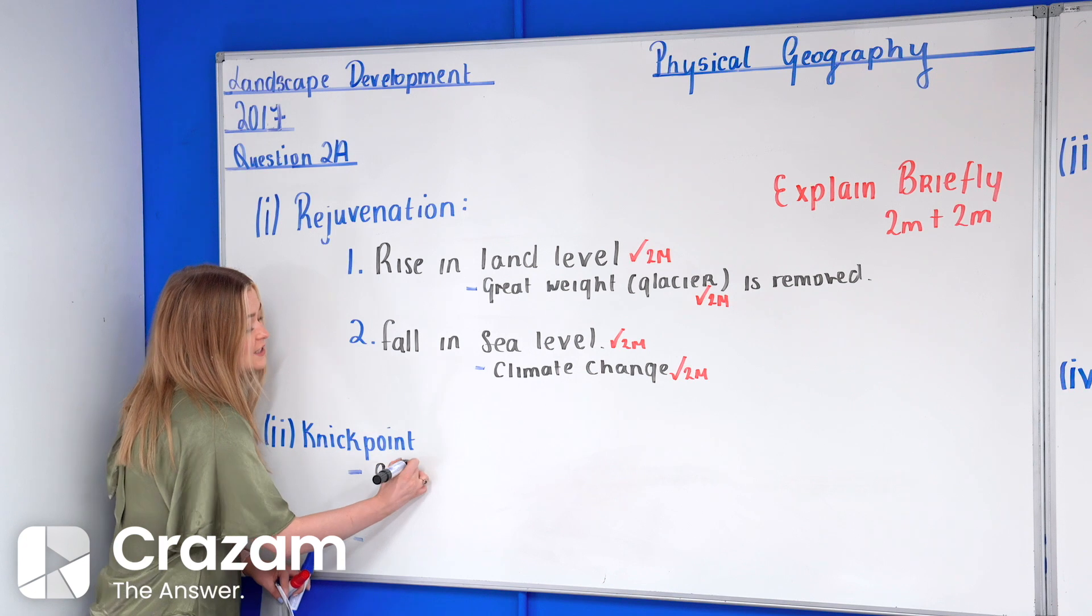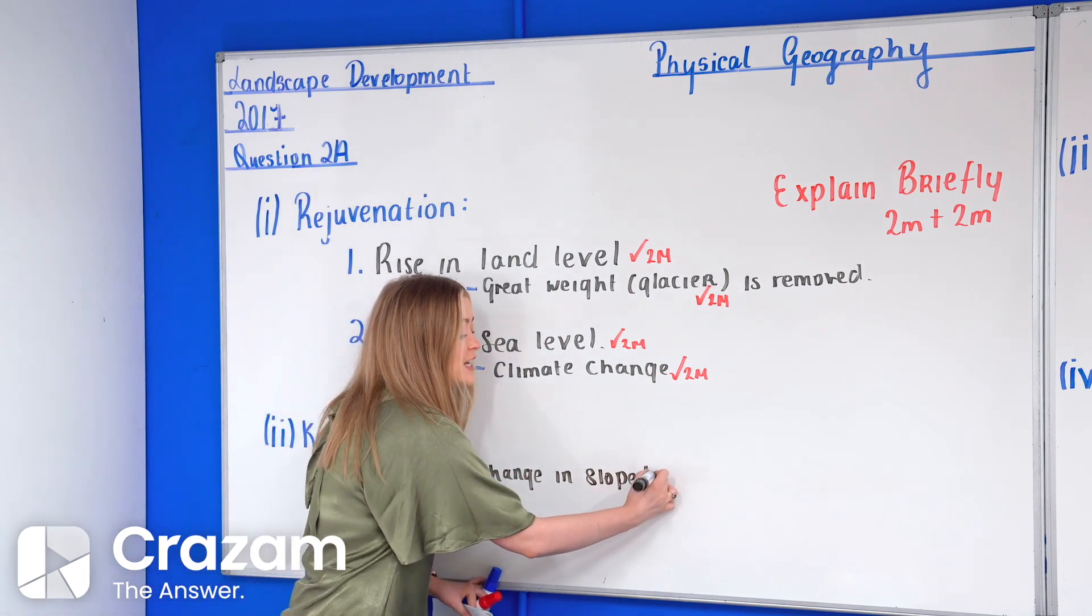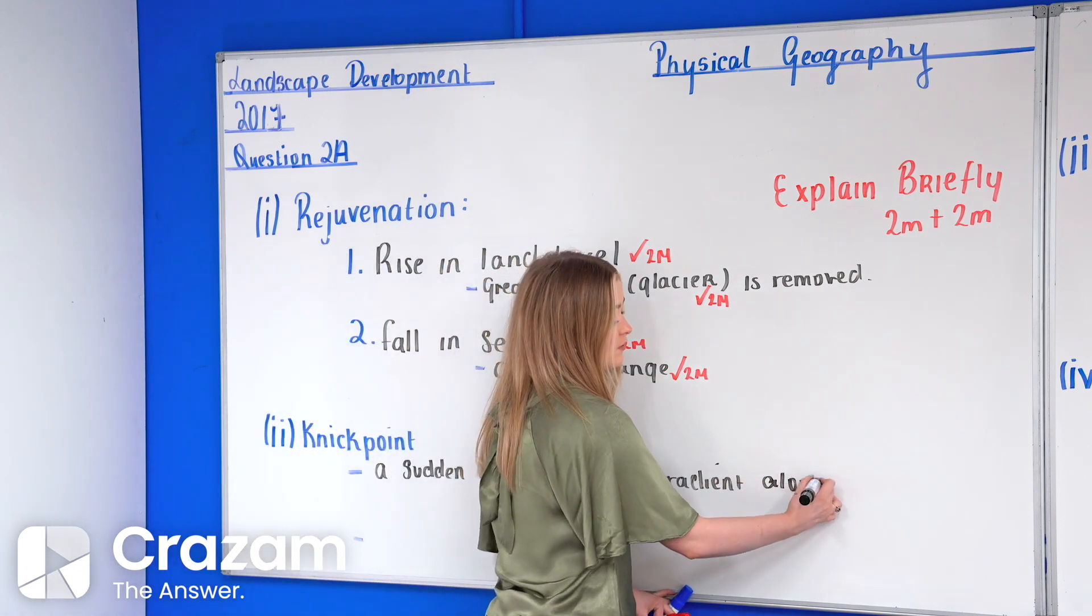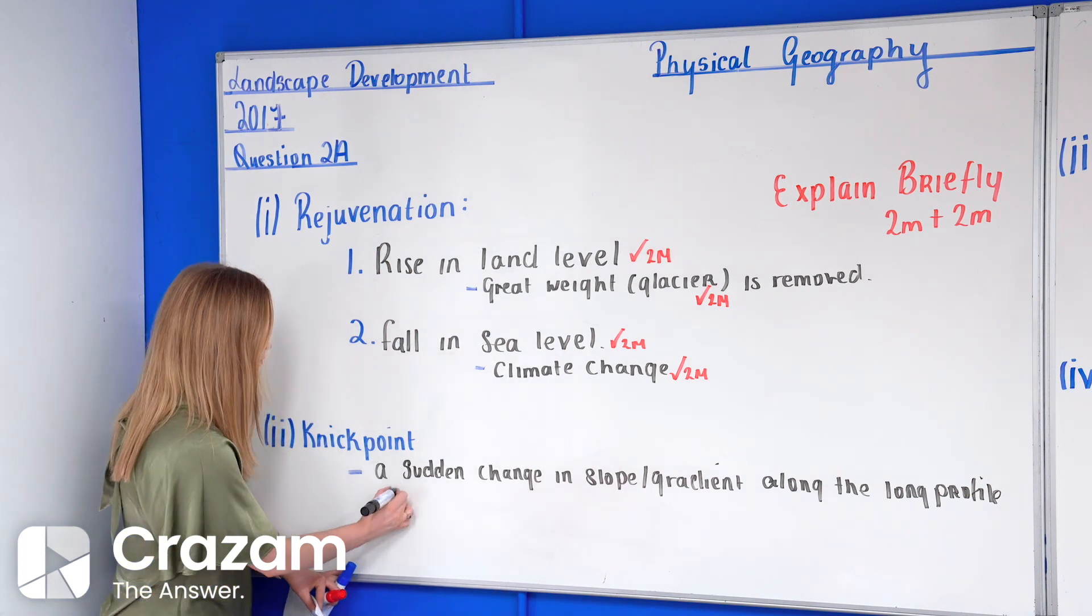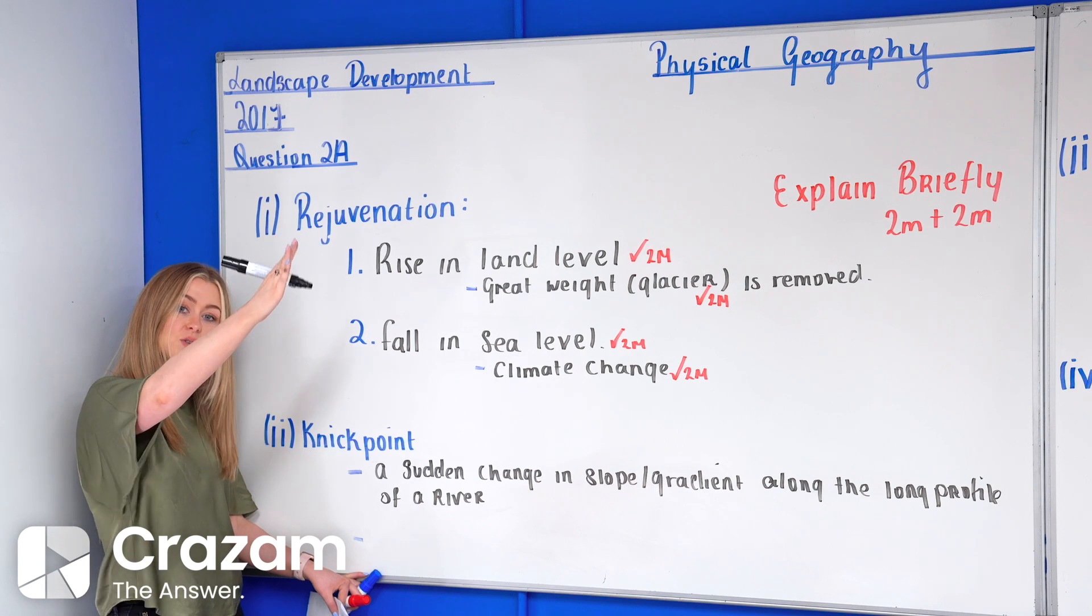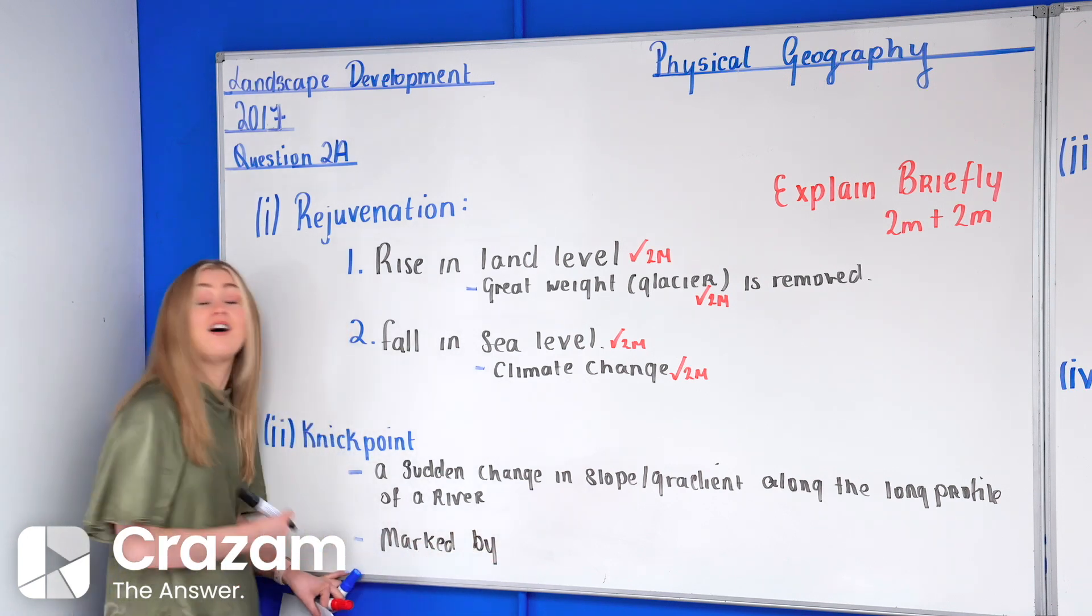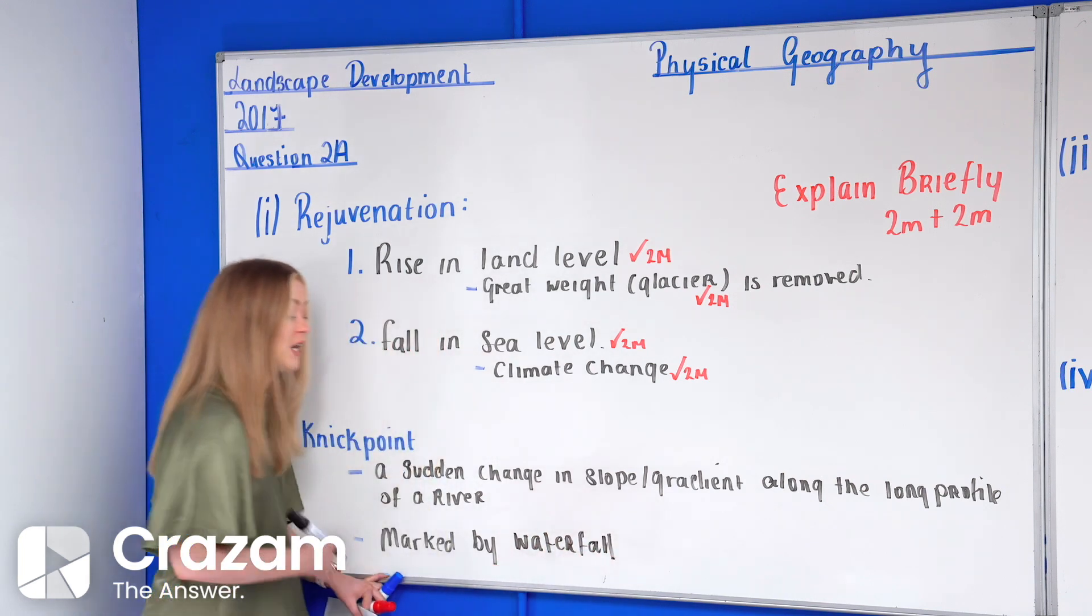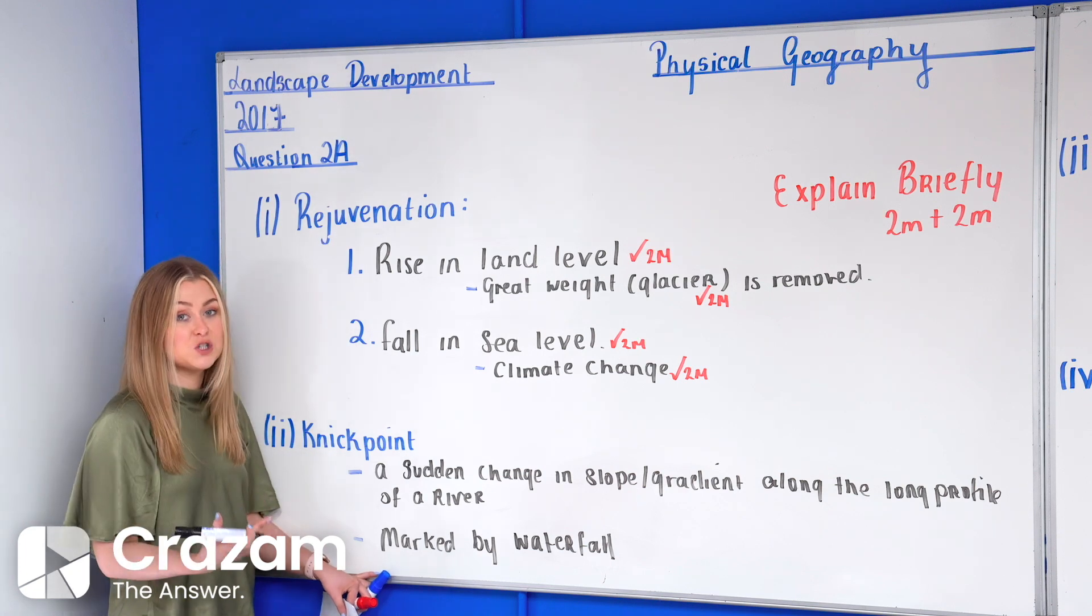So a nick point is a sudden change in slope or gradient. Either word we'll use, a sudden change in the slope or the gradient along the long profile of the river. So it's a sudden change. As you'll see there it's a sharp change. So the long profile of the river usually would go quite curved and it goes for some strange reason. Now this is usually marked by either a waterfall or maybe a series of rapids, depending on the number of nick points. So I'm going to pop down here, it's marked by a waterfall. So again a waterfall is that vertical fall of water that we usually see in the youthful stage of the river.